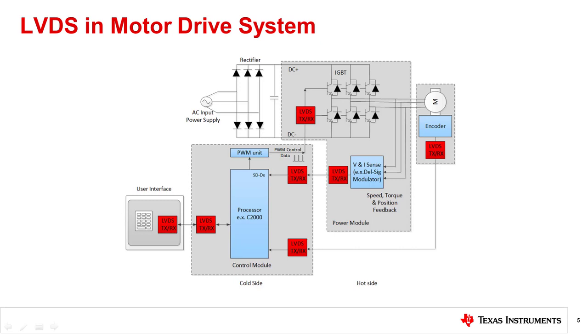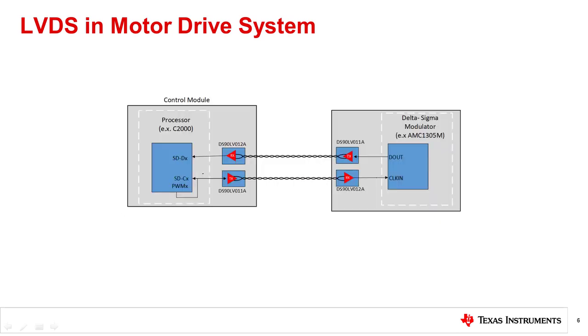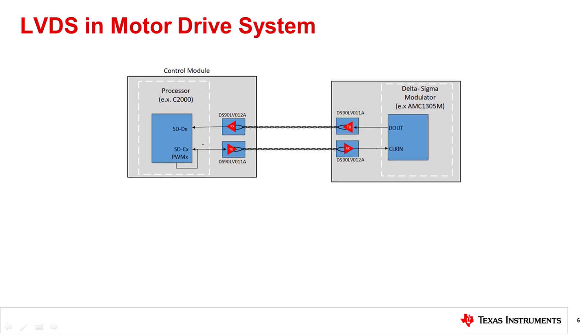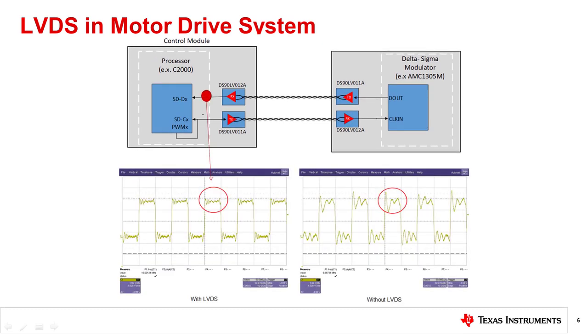Here's one example using LVDS between voltage or current sensing module and the processor. Instead of using a standard single-ended cable to transfer the signals, using a LVDS TX/RX to send the data and clock signals between the ADC and the processor reduces the noise in the output of the ADC. The waveform shows the noise in output voltage of the ADC modulator at a data rate of 20 megabits per second, along a 20 centimeter ribbon cable between boards.